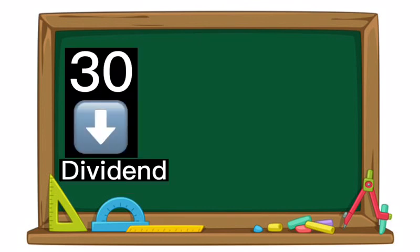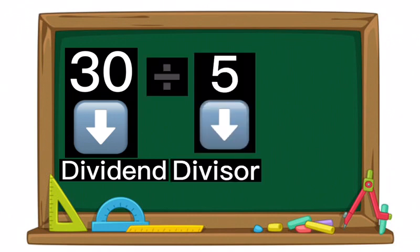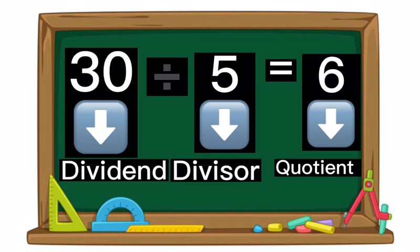Dividend is the number that is being divided. The number by which we divide is a divisor. Quotient is the final answer that we get when we divide a number.